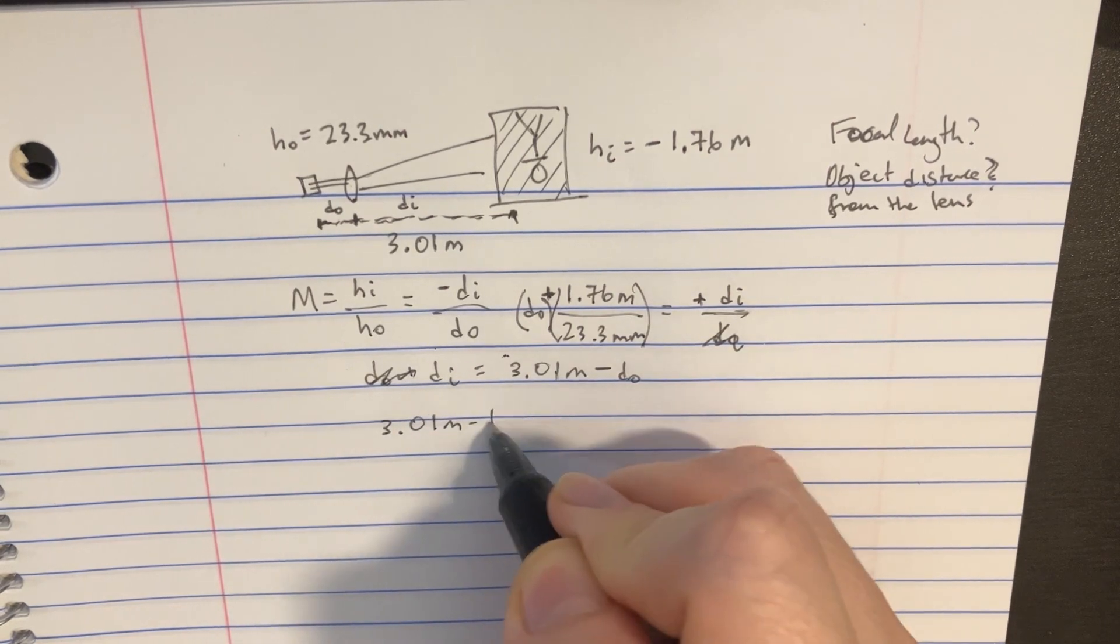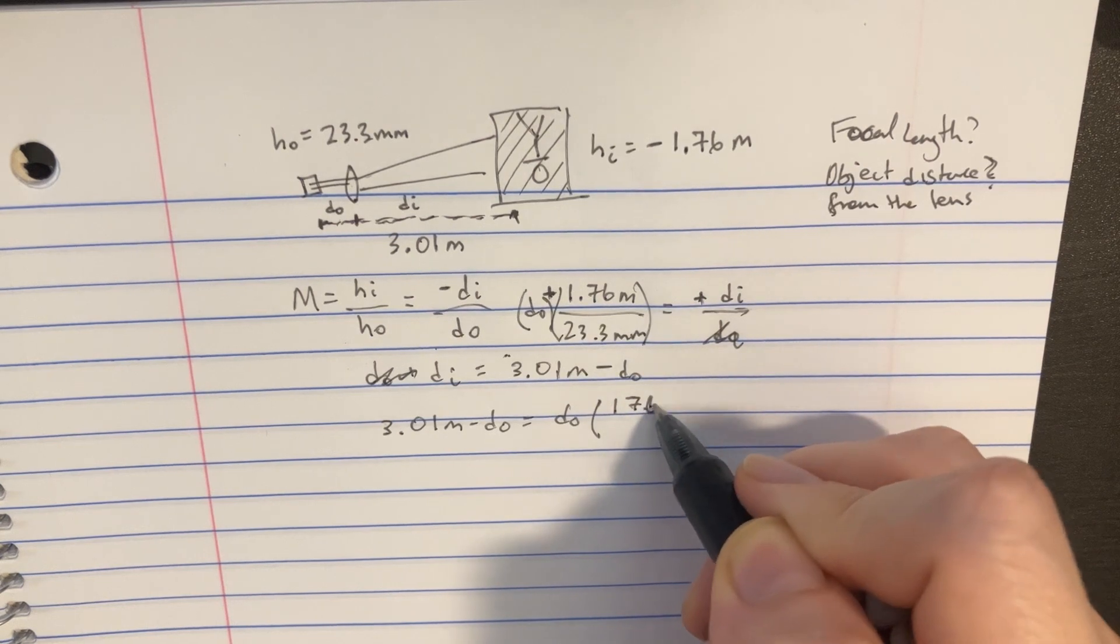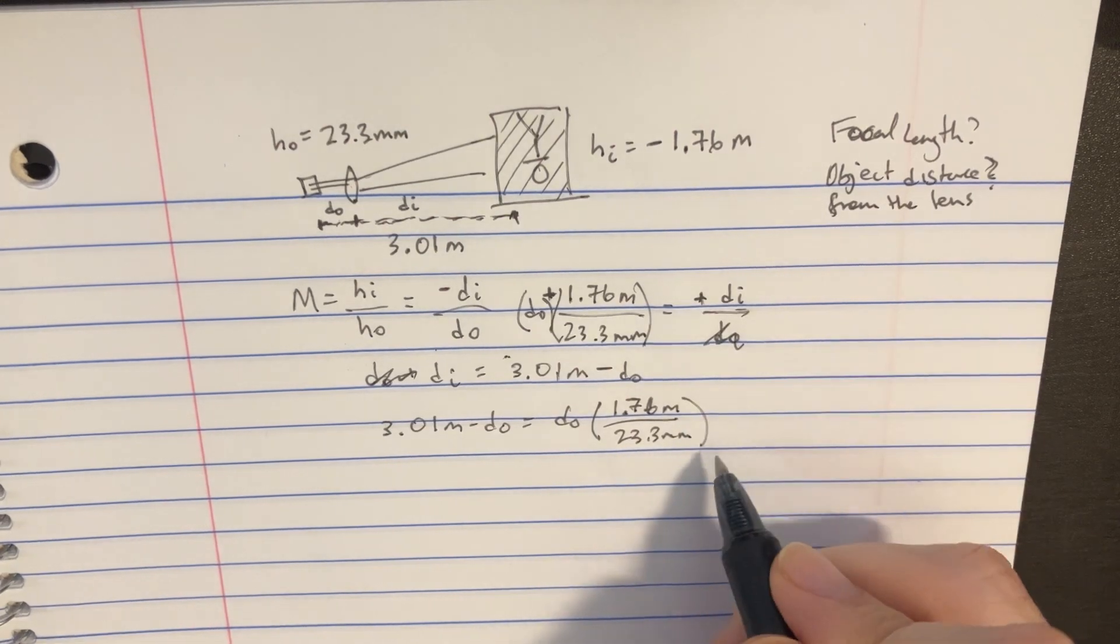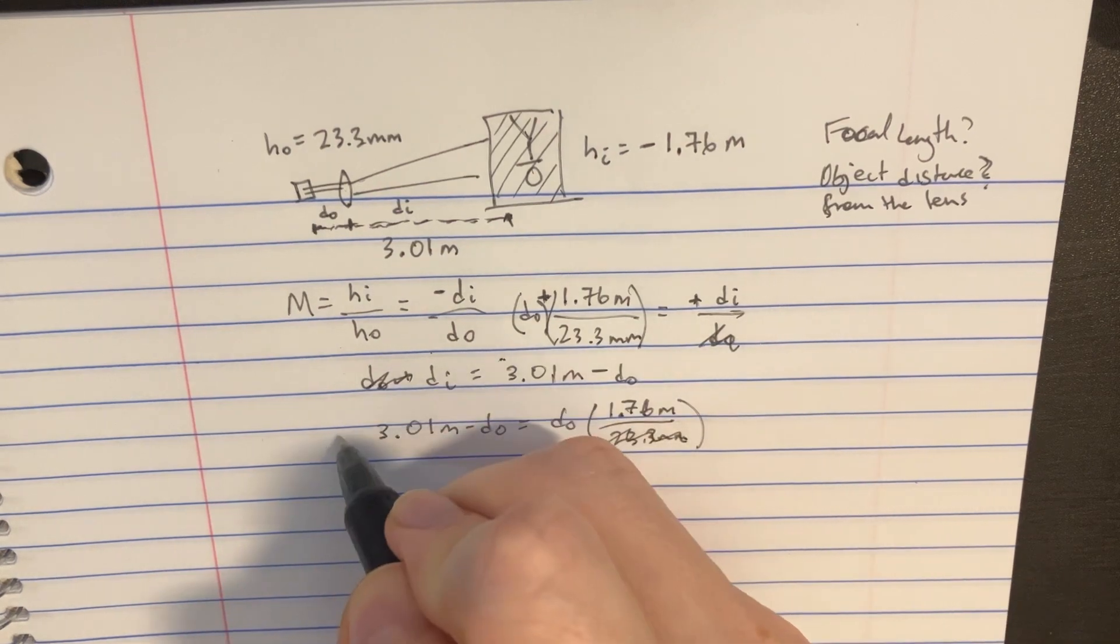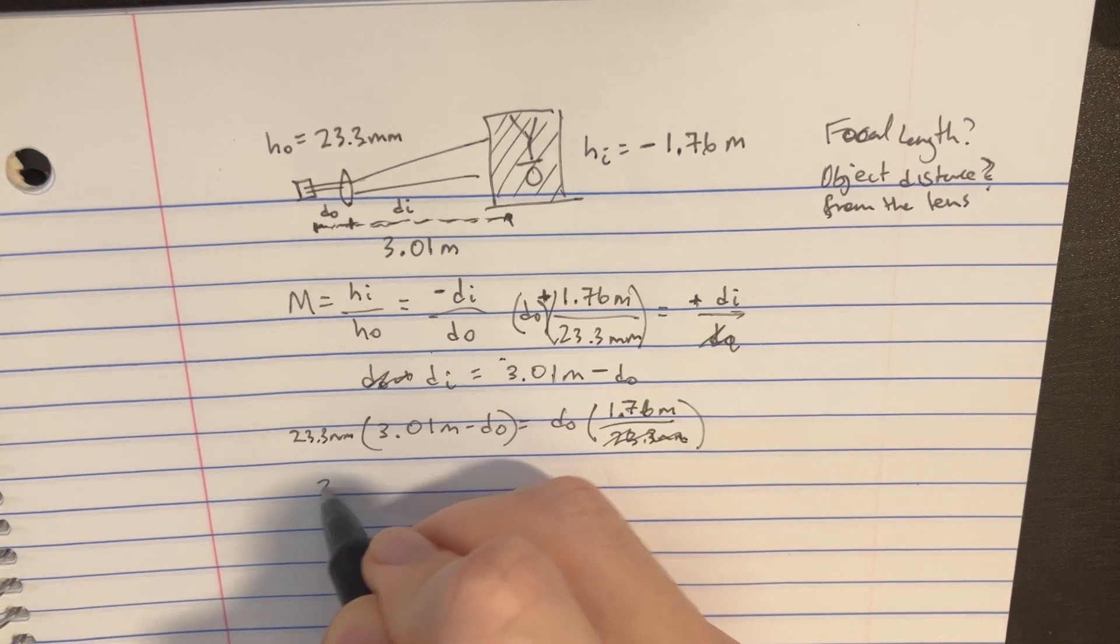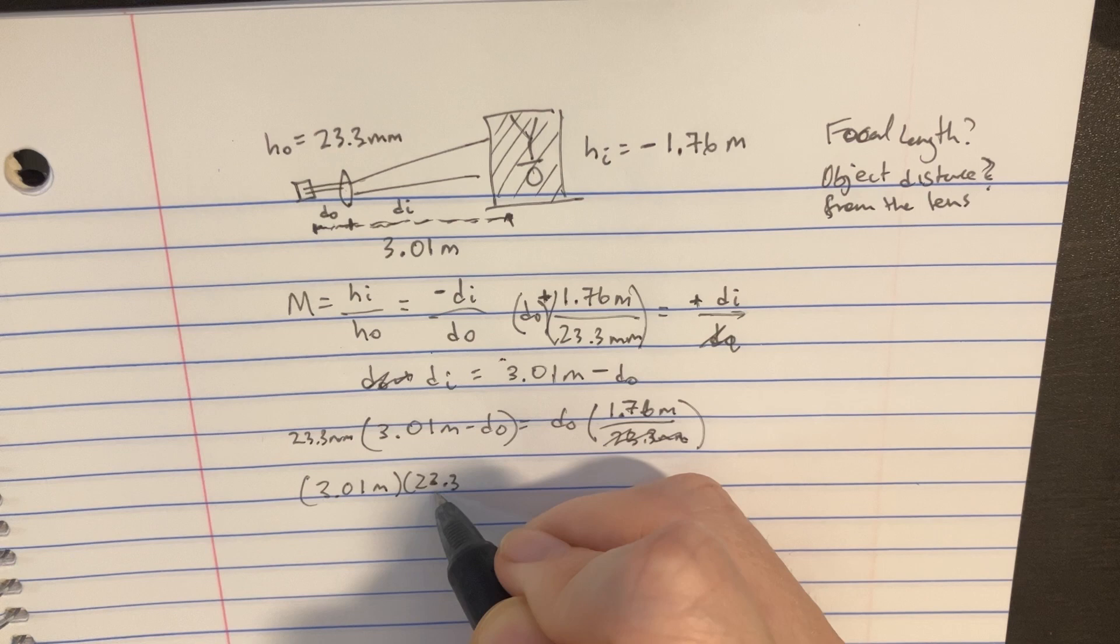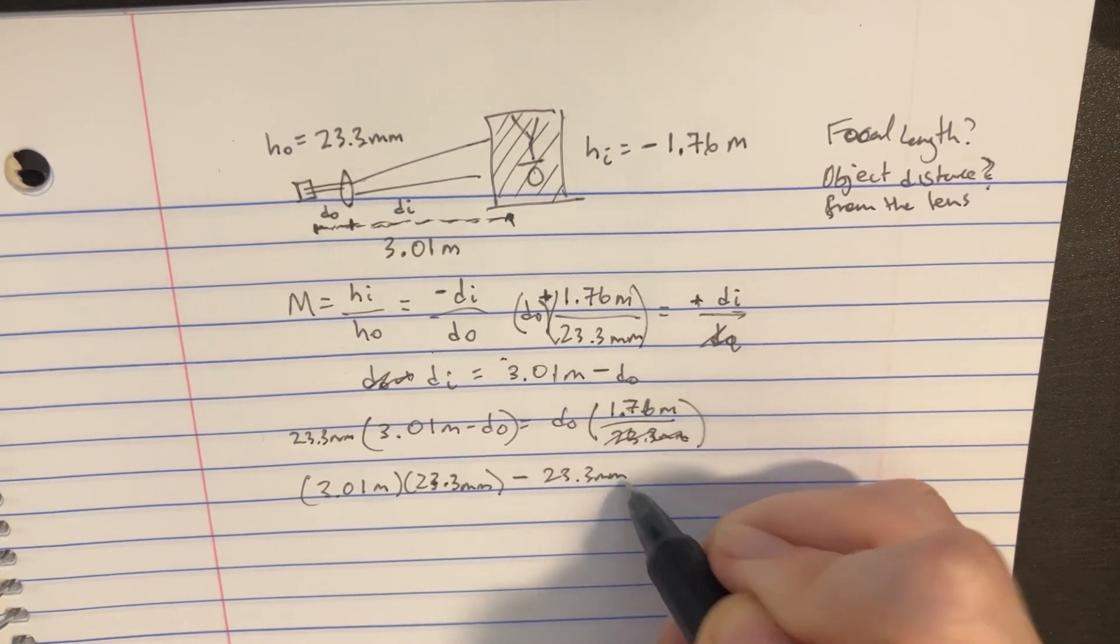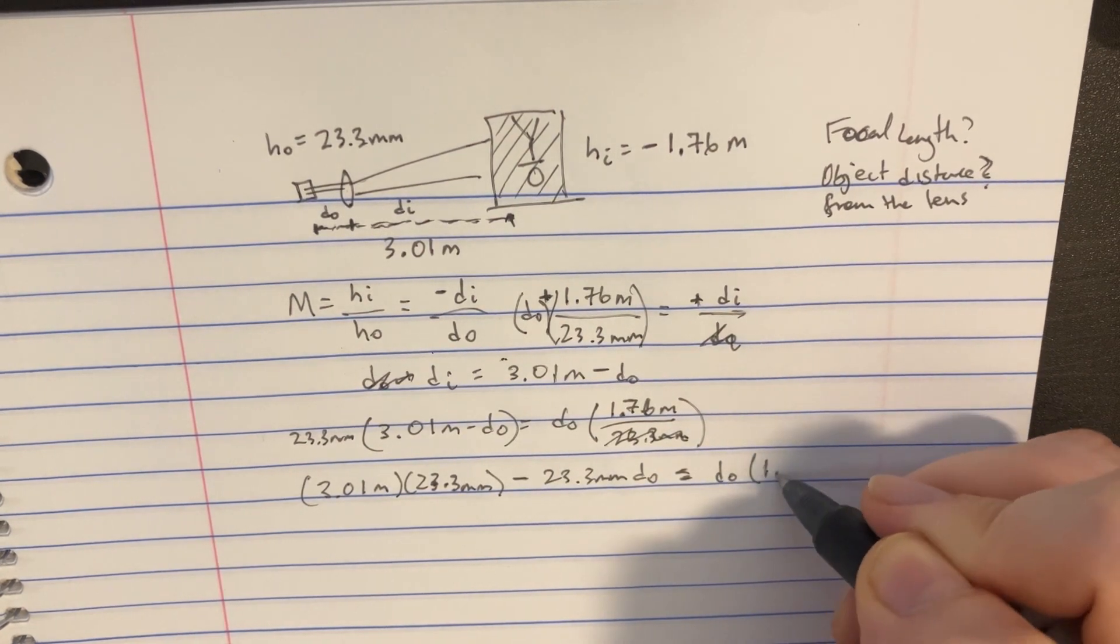So we'll say 3.01 meters minus DO is equal to the DO times 1.76 meters over the 23.3 millimeters. And now we can just multiply both sides by this 23.3 millimeters. So I'll expand that: times 23.3 millimeters minus the 23.3, and then here's DO. That's just going to equal DO times 1.76 meters.